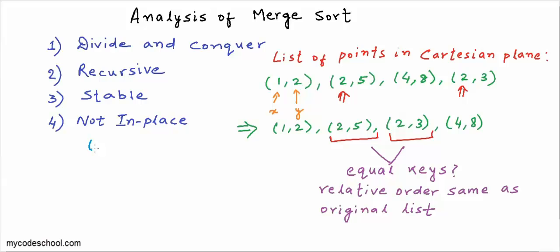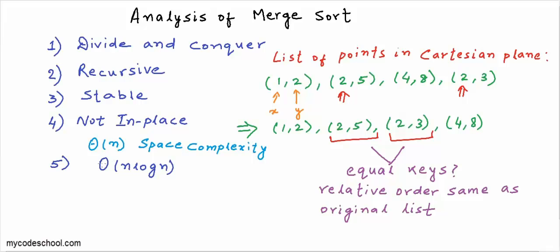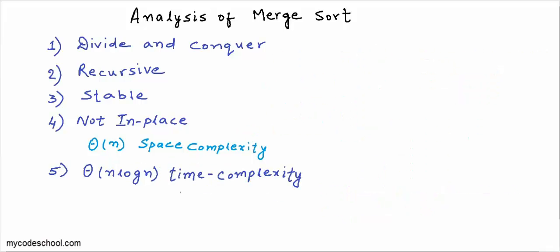The space complexity of merge sort is O(n) — technically theta(n), which means memory consumption is proportional to the number of elements. The time complexity of merge sort algorithm is O(n log n) — again, more precisely theta(n log n). If you are not familiar with big O and theta notations, we have a series on time complexity analysis linked in the description of this video.